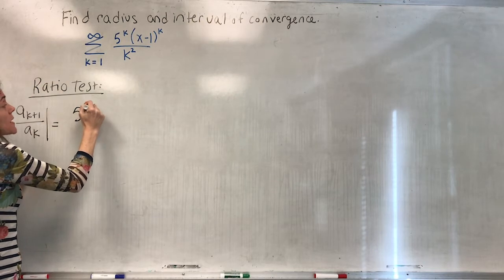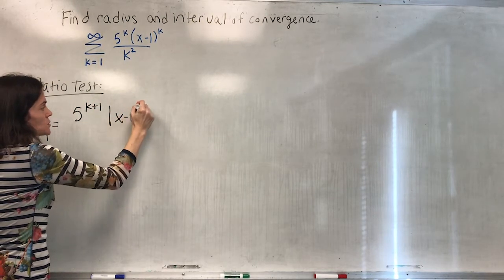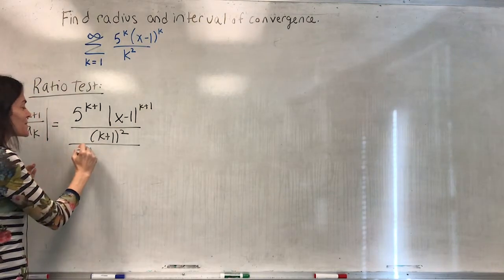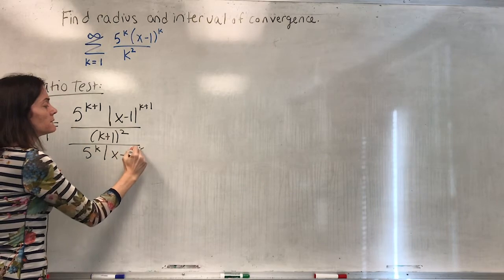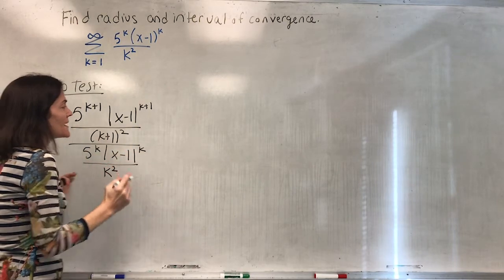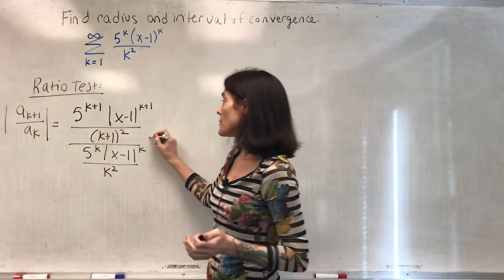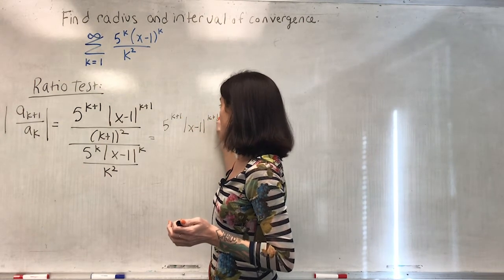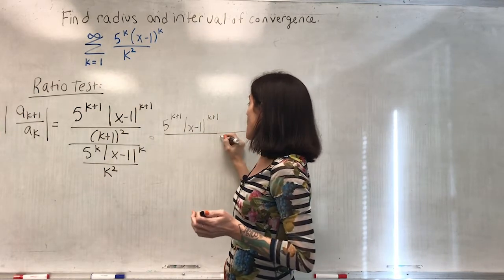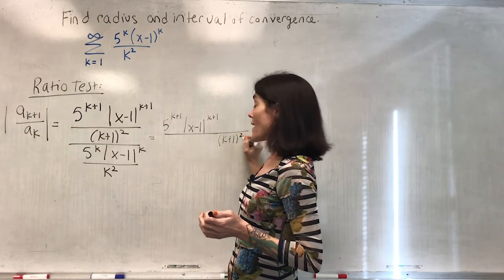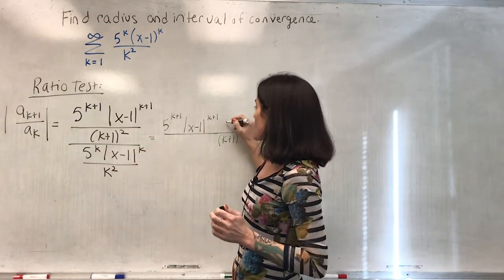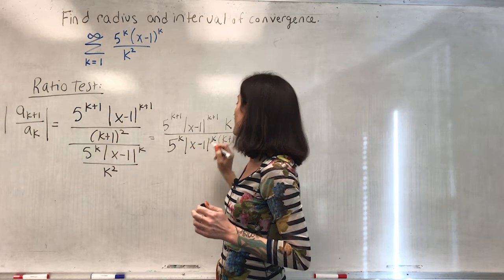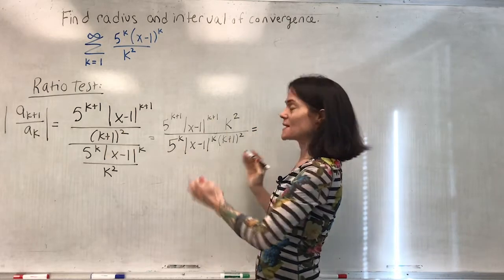This becomes 5 to the k+1 times |x minus 1| to the k+1, divided by (k+1) squared, and then I divide by the k-th term over k squared. Now I will invert and multiply, lining things up: we have 5 to the k+1, |x minus 1| to the k+1 in the numerator, (k+1) squared in the denominator, and then k squared and 5 to the k times |x minus 1| to the k move accordingly.